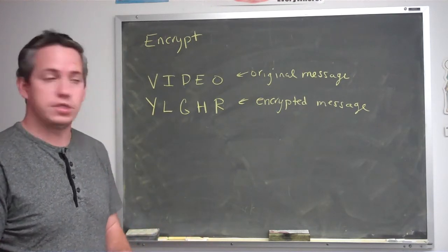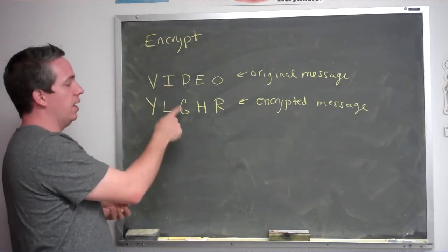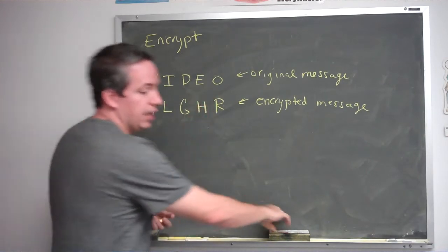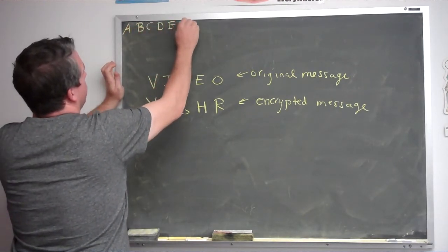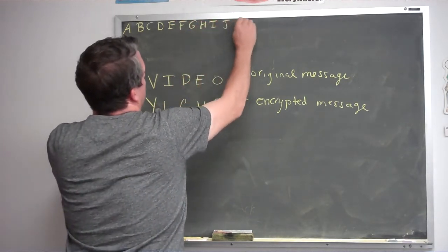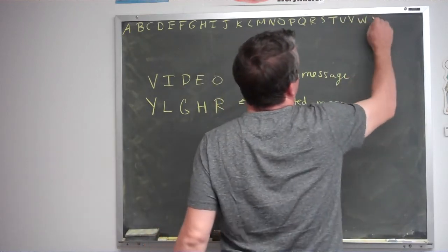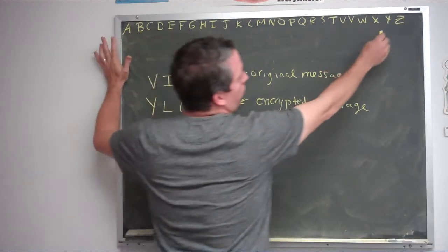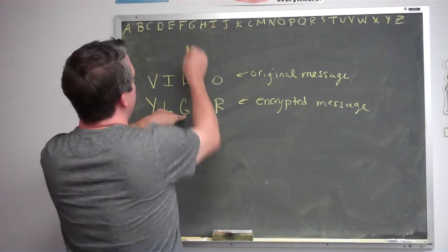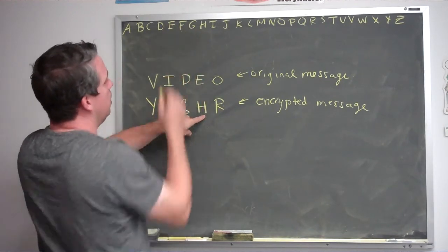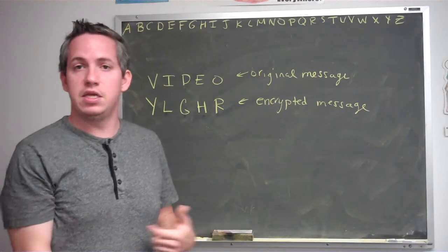They can decrypt it and try to figure out what you're watching. To decrypt, you just go backwards. Take Y and go three letters back: X, W, V — you get V. Take L, go back three to I. G goes back to D. H goes back to E. And R goes back to O. So 'video' encrypts to YLGHR, but decrypts back to 'video.' That's the idea — you're able to recover the original message.